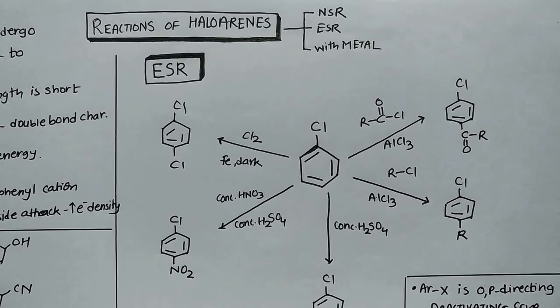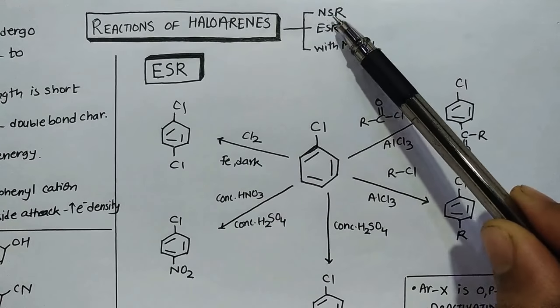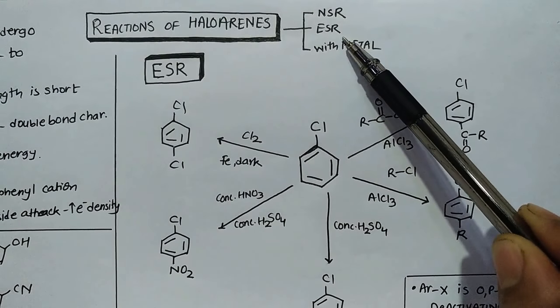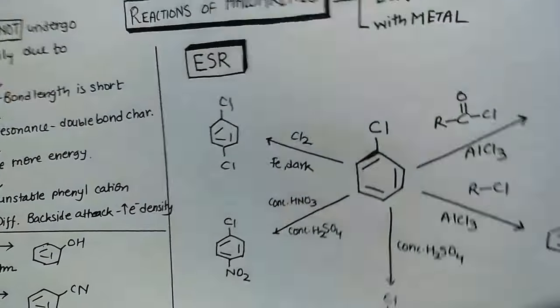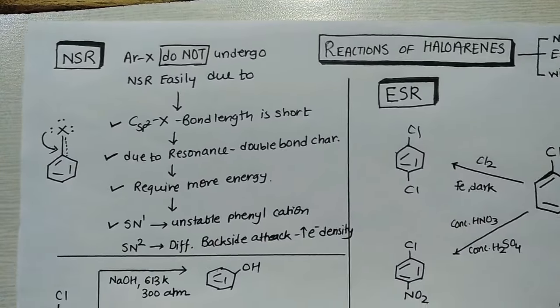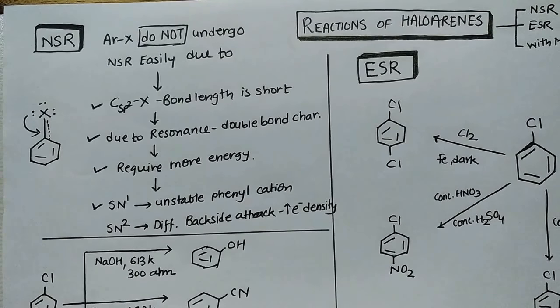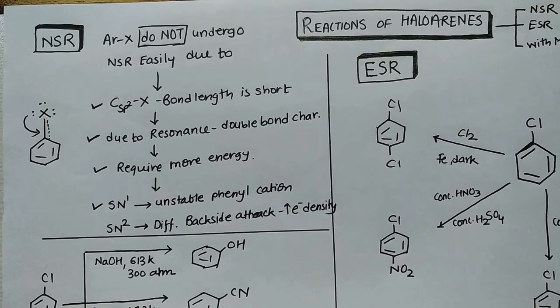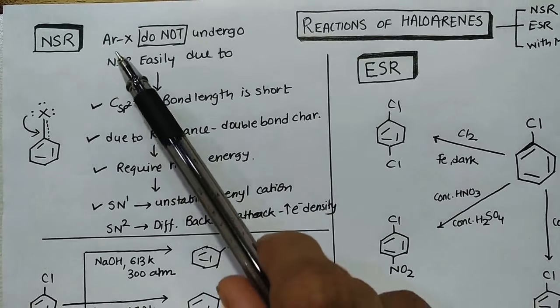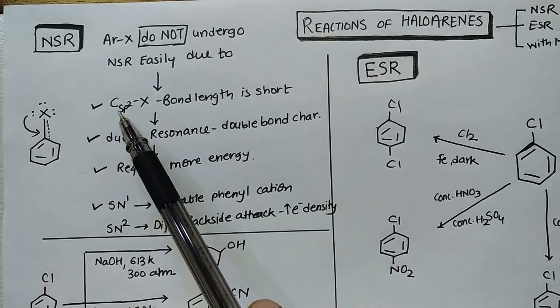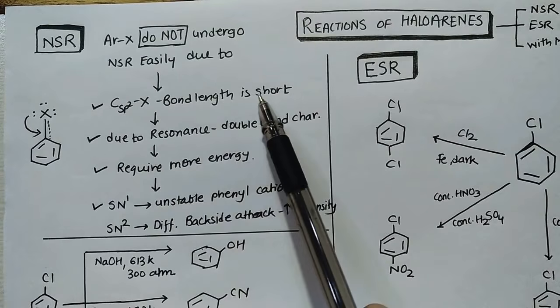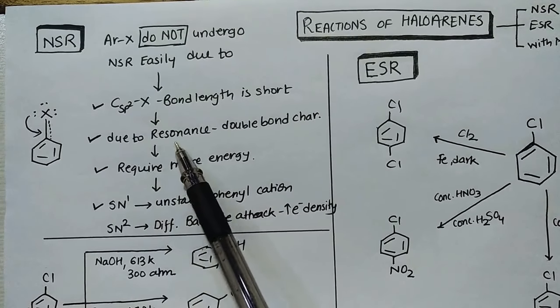Now we will talk about reactions. Reactions mainly are three categories: NSR, ESR, and reaction with metal. Let's first have a look at NSR. Just as you know, we have discussed that alkyl halide NSR is easy, but aryl halide is not easy.